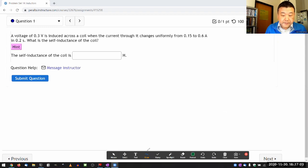The problem says that a voltage is induced across a coil when the current through it changes uniformly. Let me label this voltage as ΔV.